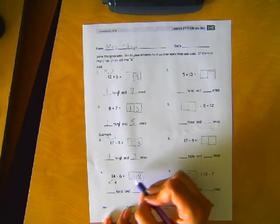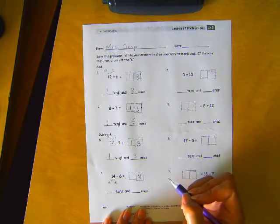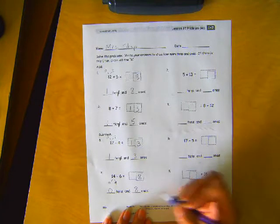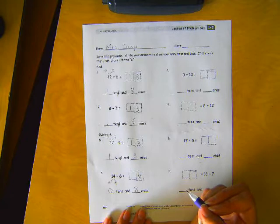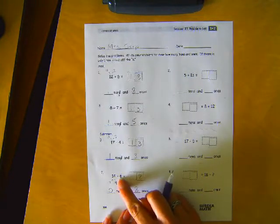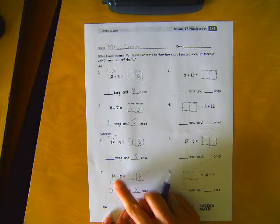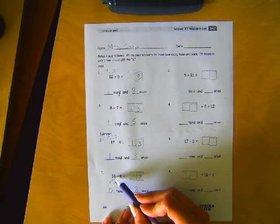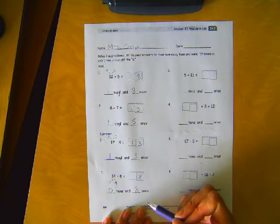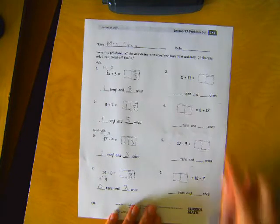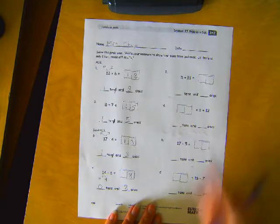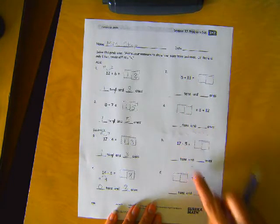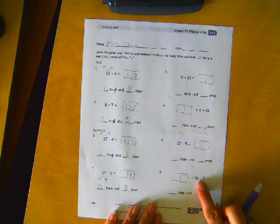So do we have any tens? No. So we have zero tens and eight ones. Now you can always go back and check to make sure this is right. I know that was a little confusing. So you could always just count from six up to fourteen. And if it took eight, then that would be right. Okay, you're going to do this side on your own. These two are adding. These two are subtracting. So be careful.